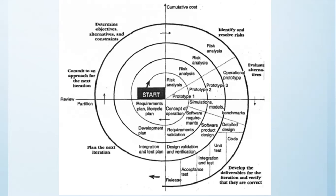Each iteration involves the six steps shown in bold on the outer edges of the Spiral. The first step is you have to determine the objectives, alternatives, and constraints. Then, you move on to identifying and resolving risks. You evaluate the alternatives. You then develop the deliverables for that iteration and verify that they are correct. You then plan the next iteration, and finally you commit to an approach for the next iteration.